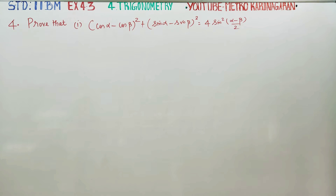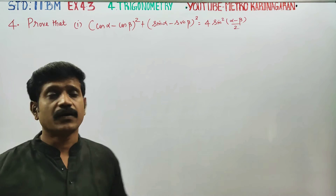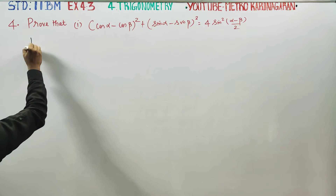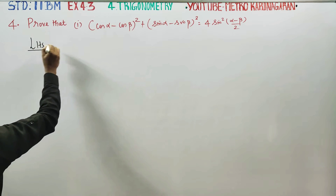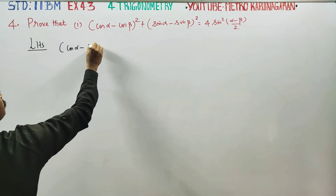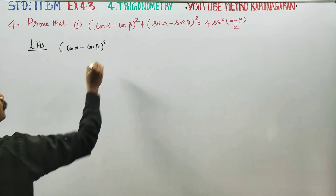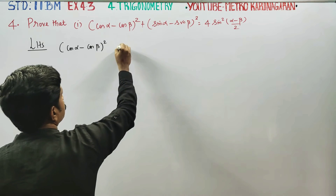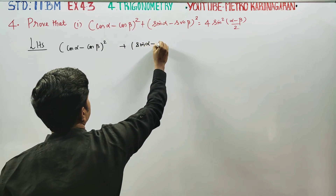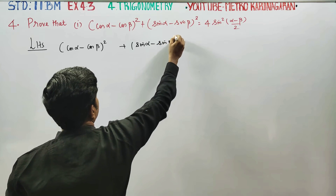Dear students, in exercise number 4.3, sum number 4, first subdivision, you have to prove this answer. First I will start with my LHS: cos alpha minus cos beta whole square, plus sin alpha minus sin beta whole square.